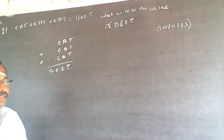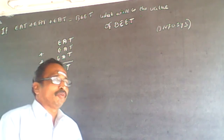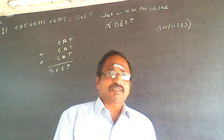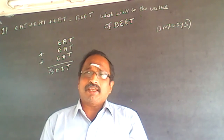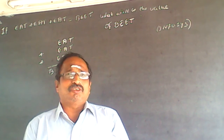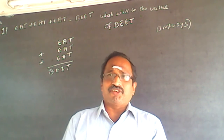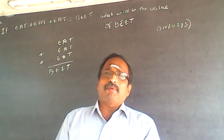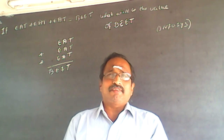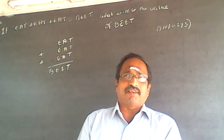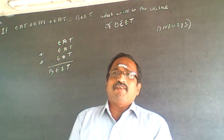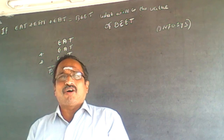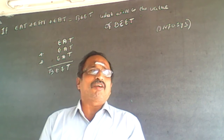There can only be two values for T. When I multiply 0 by 3, I get 0. And when I multiply 3 by 5, I get 15, which ends in 5. So T can only be 0 or 5.